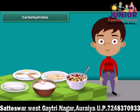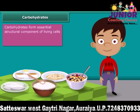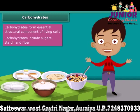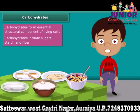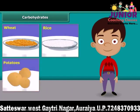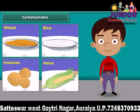First, carbohydrates. Carbohydrates form an essential structural component of living cells. They are the main source of energy for animals. Carbohydrates include sugars, starch, fiber, etc. They are mainly found in wheat, rice, potatoes, corn, and maize.